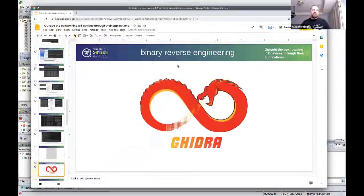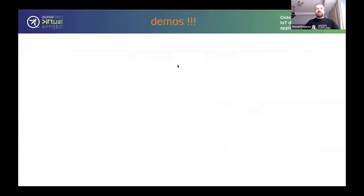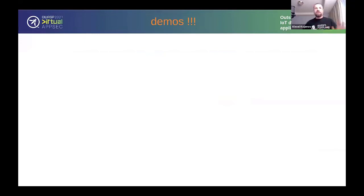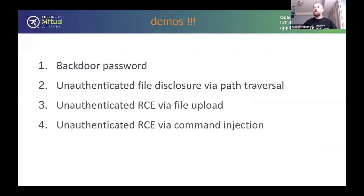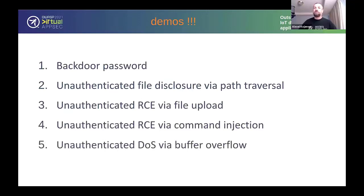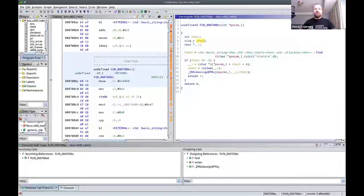Now we're basically doing an application security assessment. For the next 20 minutes I'll be switching back and forth between different windows. What we're going to do together is find a backdoor password, path traversal leading to unauthenticated file disclosure, two remote code executions through different vectors, and denial of service through buffer overflow.